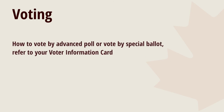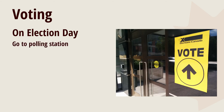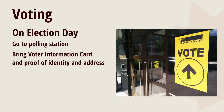Number three is about how to vote before Election Day at an advanced poll or by special ballot — that information is also on your voter card. Number four is what you do on Election Day: you need to go to the polling station, which will be somewhere near your home, usually in a church, school, or recreation center. You should bring your voter information card and proof of your identity and address.